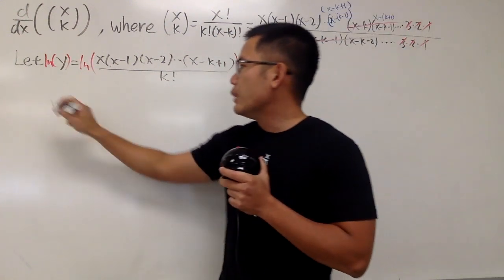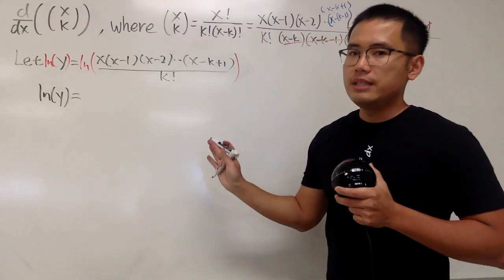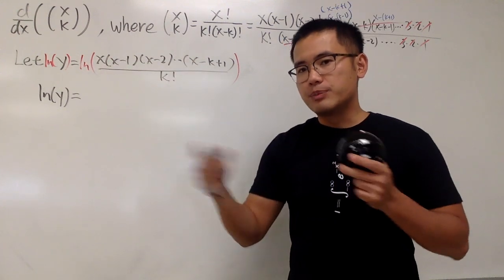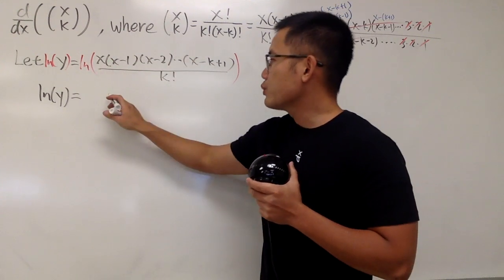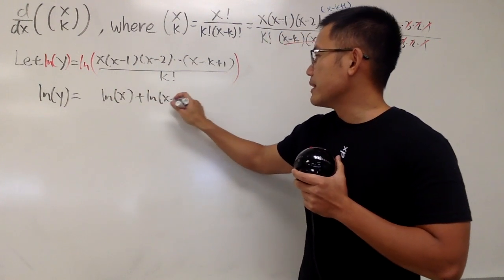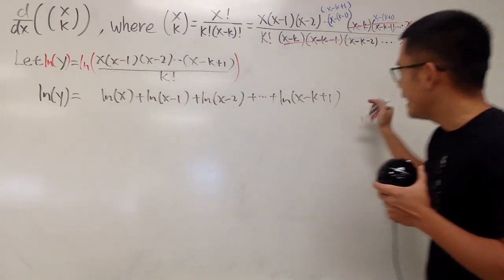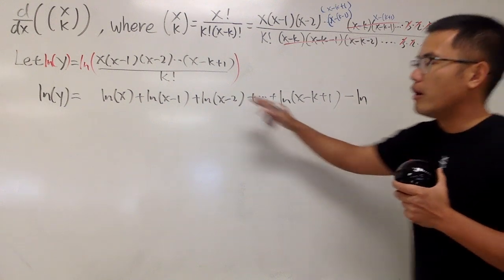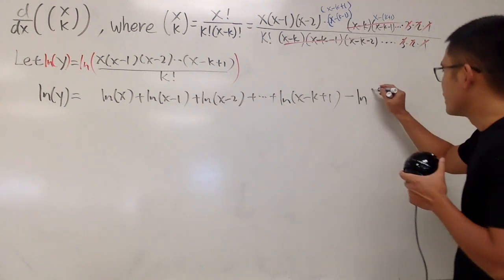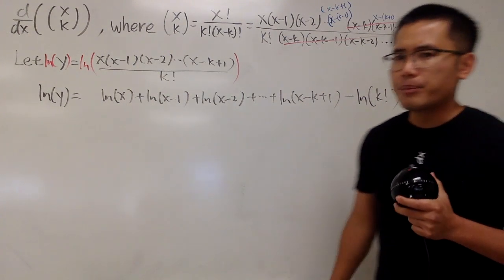When we do that on the left-hand side, we get the natural log of y. Now on the top, it's a product, so we can break them down into the sum. The first one is natural log of x. Next one is plus natural log of x minus 1. And because we have a quotient, this is minus natural log of the k factorial. So this is how we can break it apart.